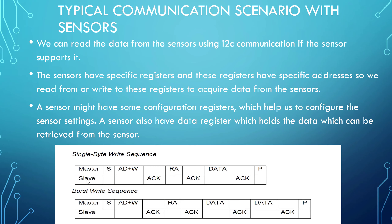For transmitting one byte of data: the master generates a start condition, sends the slave address, then sends the write bit (0). The slave sends an acknowledgement signal. Then the master sends the register address (8 bits / one byte), the slave acknowledges, the master sends the data byte to write into the internal register, and the slave acknowledges. Then communication stops. This is single byte writing.